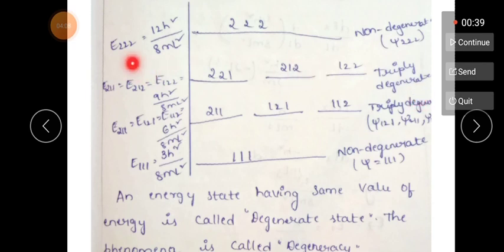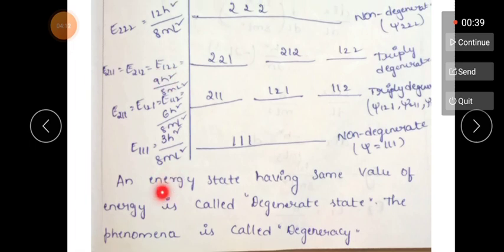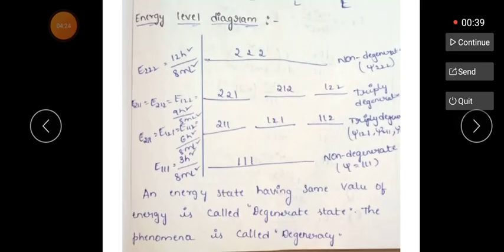Next, consider E222, where nx = ny = nz = 2. This has only one possibility, since all three quantum numbers are the same and no further permutations are possible. Therefore, it is a non-degenerate state. The energy is 12h²/8mL².